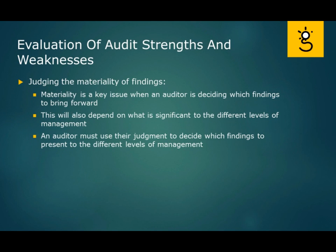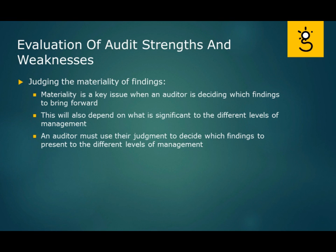We also need to judge the materiality of findings. Materiality is a key issue when the auditor is deciding what findings to bring forward. It will also depend on what is significant to different levels of management and what they're responsible for. You have to use your judgment to decide which findings to present to different management levels. It's important that all findings are included in your reports and available at the top end of management — CEO or CIO level — so they have full knowledge. Different areas of management may have different areas of concern, so what's material to one group differs from another.